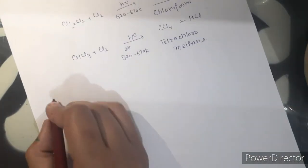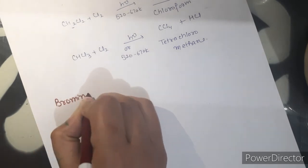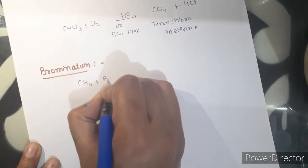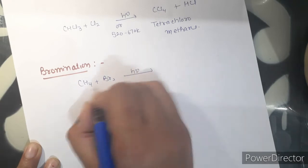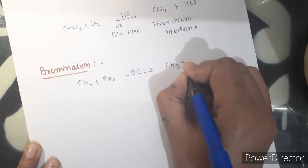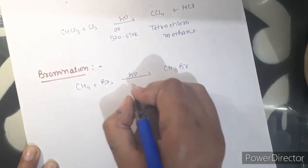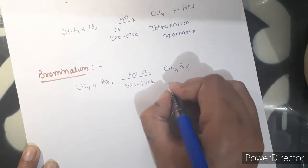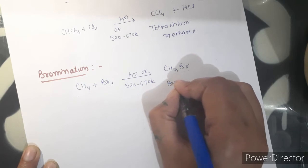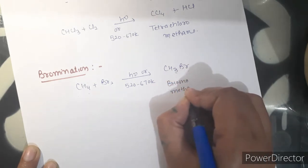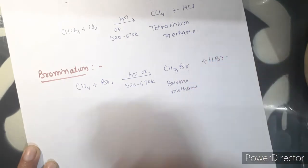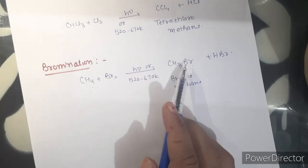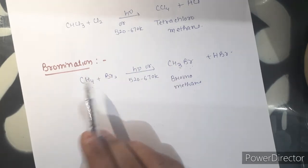In case of bromination, when alkane reacts with bromine in the presence of sunlight or at temperature 520 to 670 Kelvin, hydrogen is replaced by bromine. Like when methane reacts with bromine, it is converted into bromomethane. But bromine cannot replace all hydrogens — the reactivity of bromine towards substitution is less than chlorine.